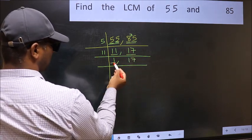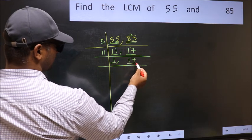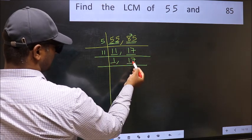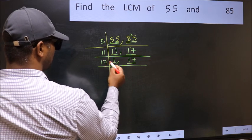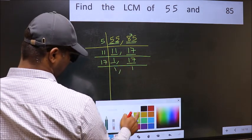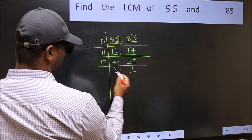Now we got 1 here, so focus on the next number 17. 17 is a prime number, so 17, 1, 17. So we got 1 in both places.